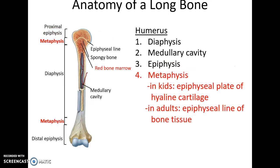Between each epiphysis and the diaphysis is the metaphysis, at both the proximal and distal ends. In children, the metaphysis contains the epiphyseal plate, made of hyaline cartilage, which allows long bones to grow longer. In adults, this has become the epiphyseal line, which has been replaced with ossified bone tissue.